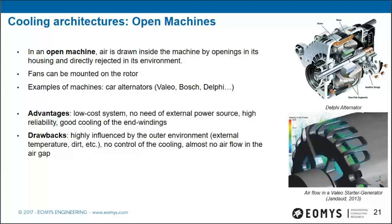Starting with open machines: air is directly drawn from the environment through axial openings and rejected radially. Fans can be mounted on the rotors. This is very widely used for car alternators, for example from Bosch and Delphi. The advantages are very low cost with no external power source, high reliability, and good cooling of the end windings since air is drawn directly through them. The main drawback is high sensitivity to the outer environment — external temperature, dirt, etc. — and no control of cooling since flow is induced by rotor rotation.